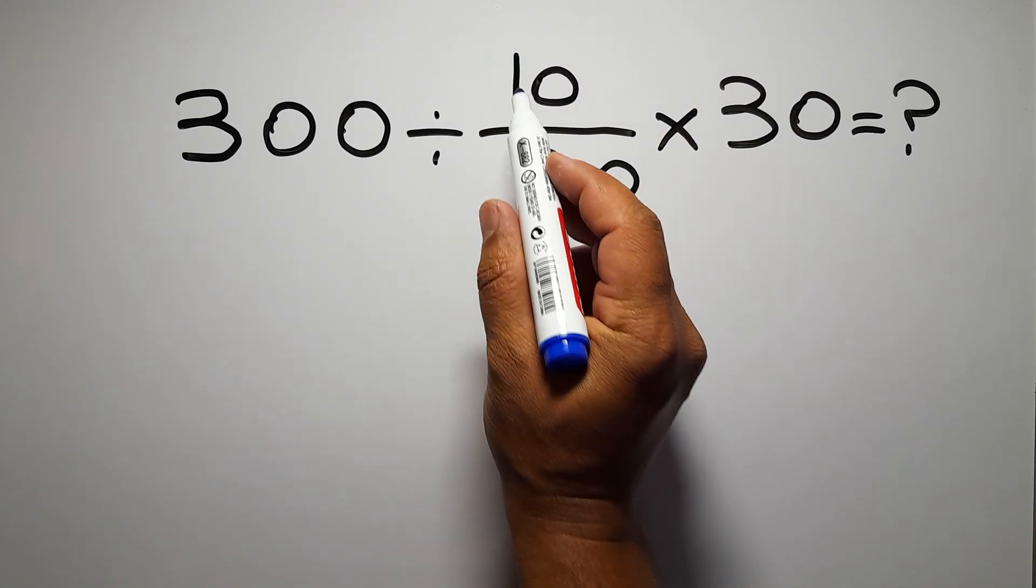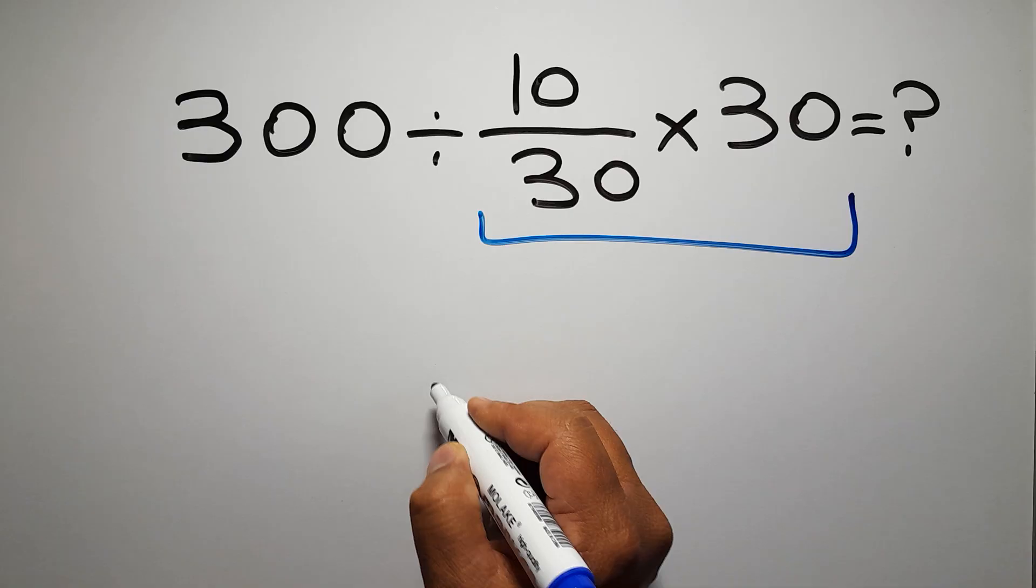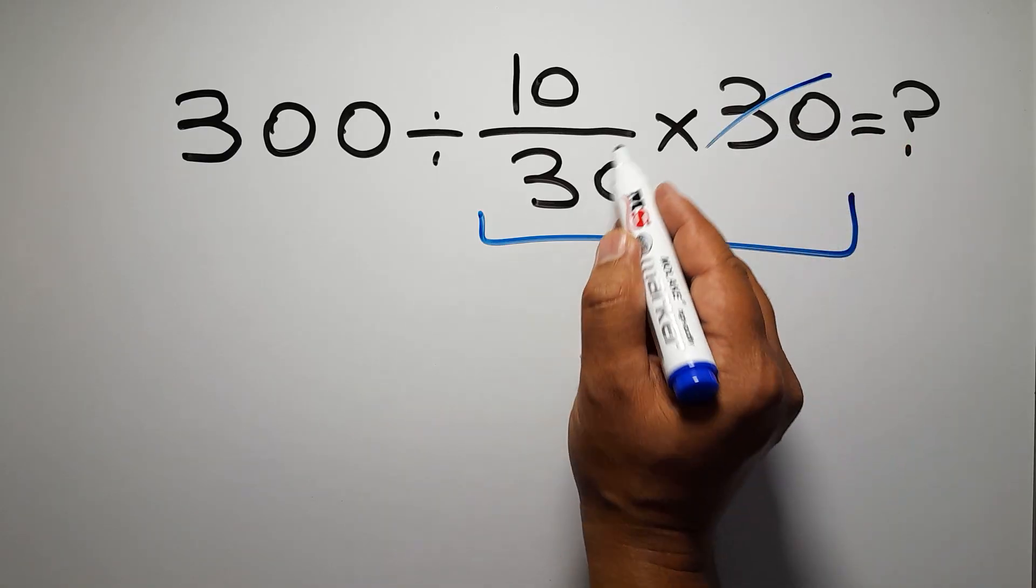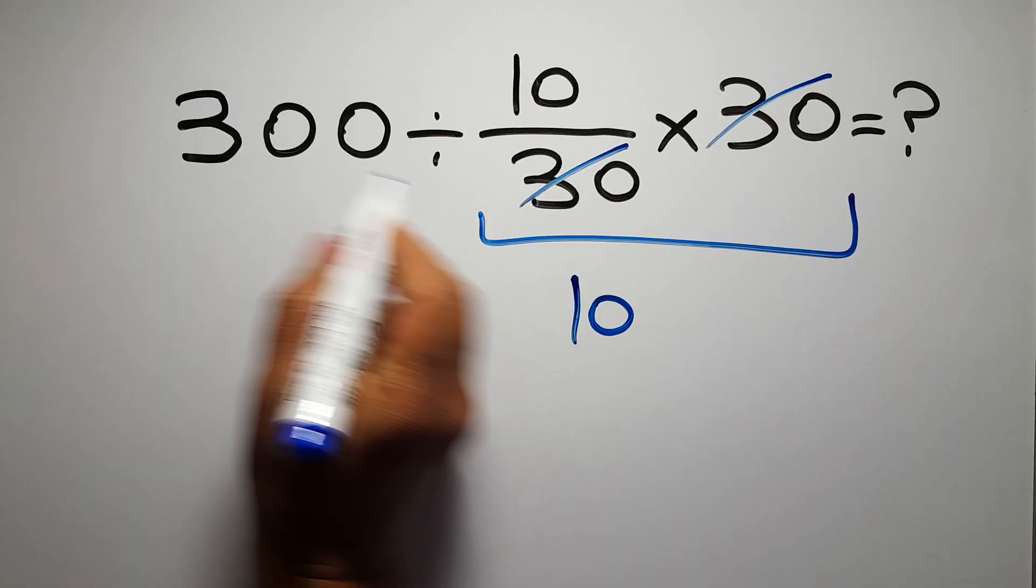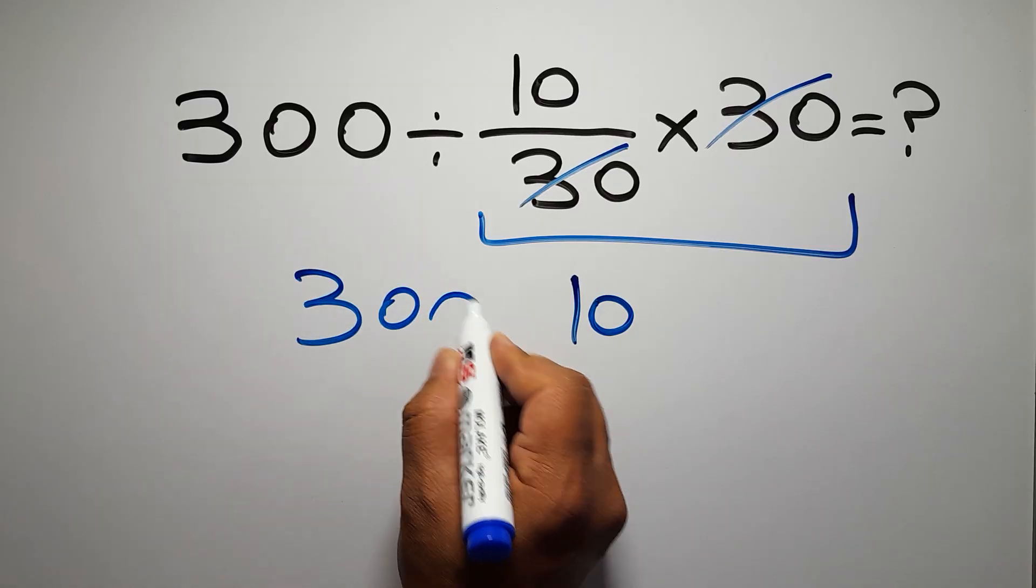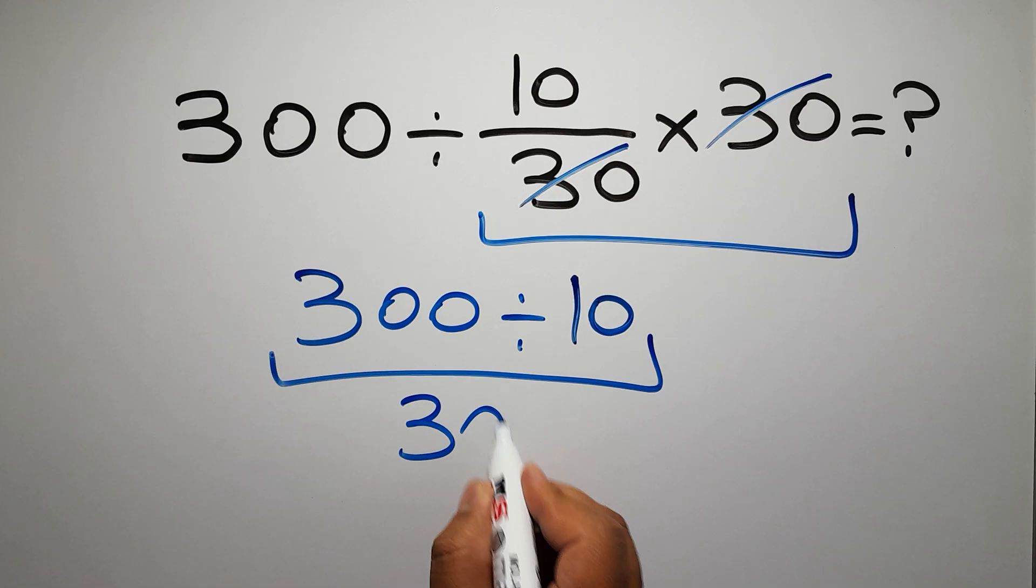First we do this multiplication, 10 over 30 times 30. We can easily cancel this 30 and this 30, so we have just 10, and 300 divided by 10 is just 30. But this answer is not correct because according to the order of operations, multiplication and division have equal priority.